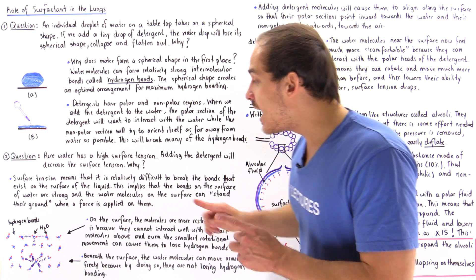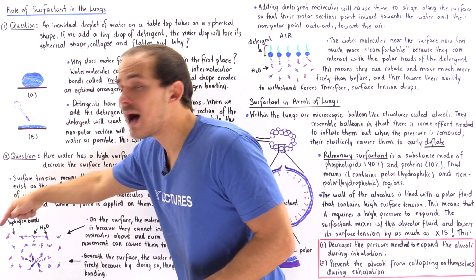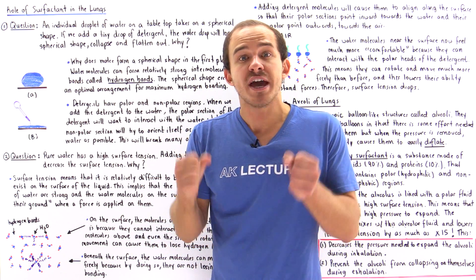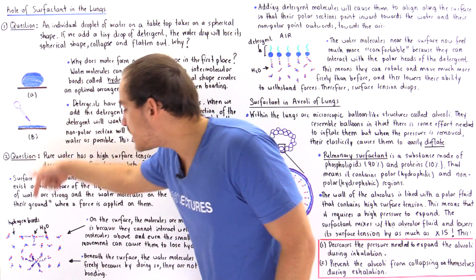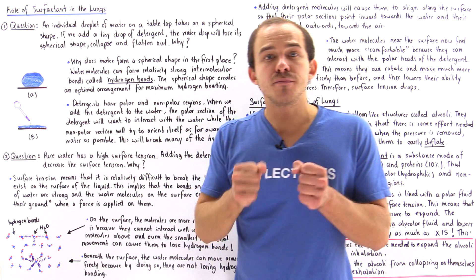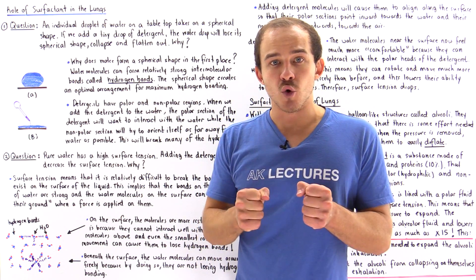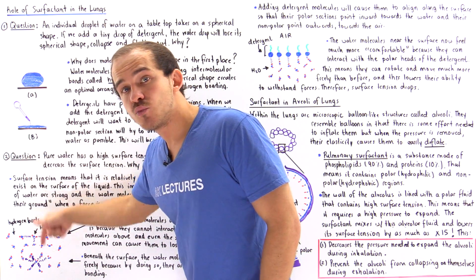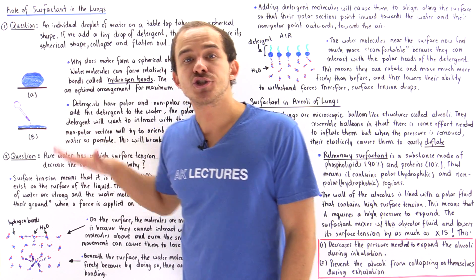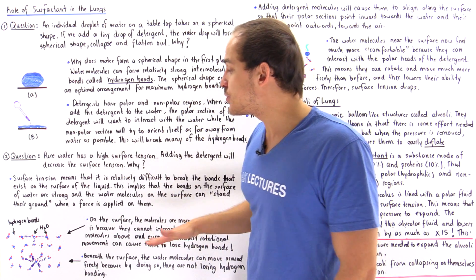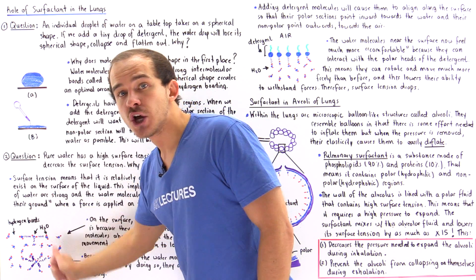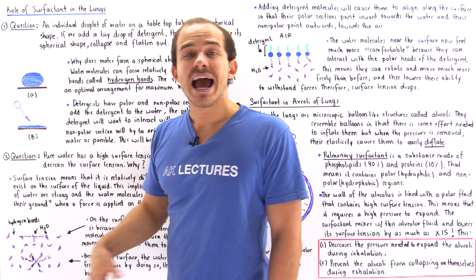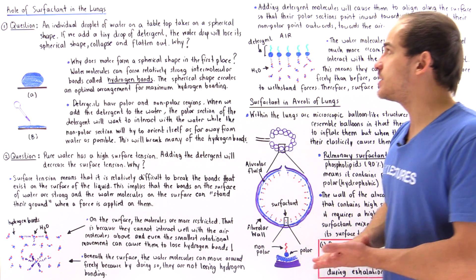Because these water molecules remain in their location and don't move, they stand their ground when we apply a force. Those molecules still don't want to move — they don't want to break those bonds. That's exactly why pure water has a high surface tension: when we apply force, those surface molecules apply force back, and that is what surface tension is.